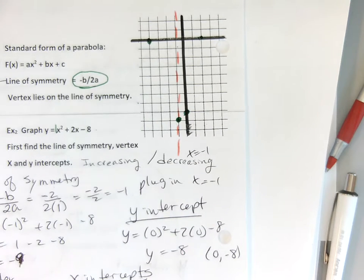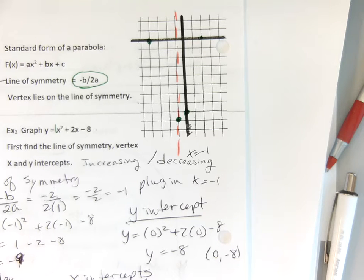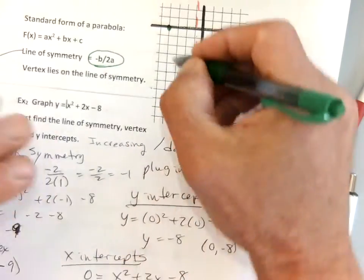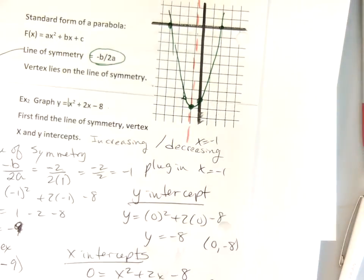So I'm going to go back to my graph and graph these. But I may as well put down one more point — there's one really easy point right there. You know it has to be there because it's symmetrical, right? So I'm going to put my point right there and graph it in.